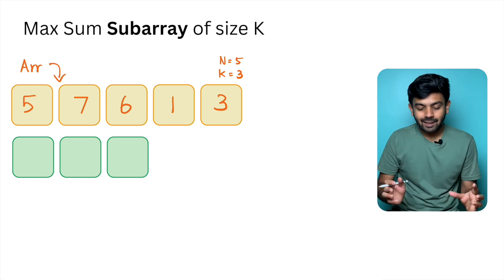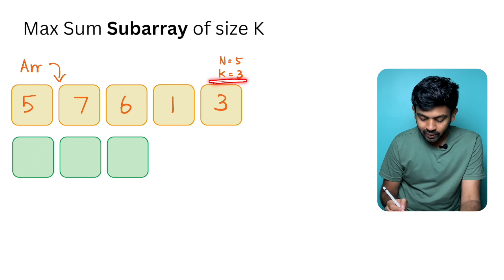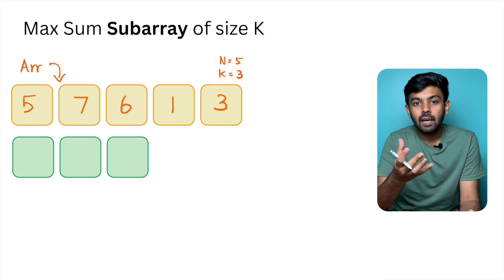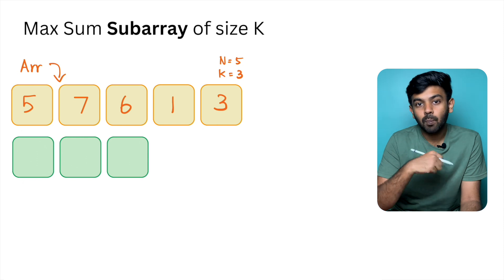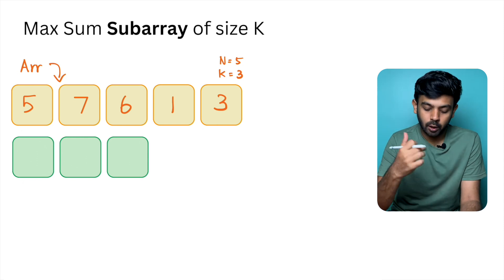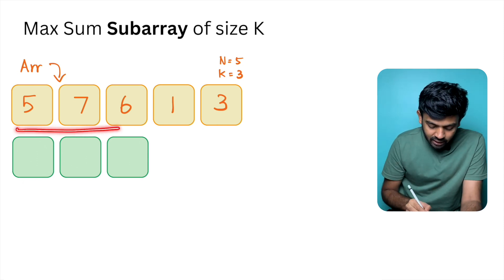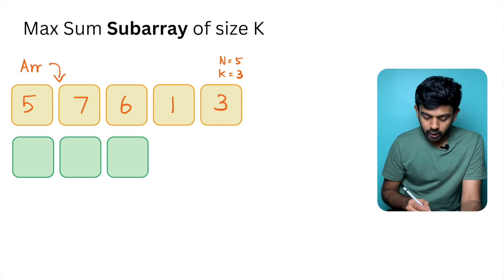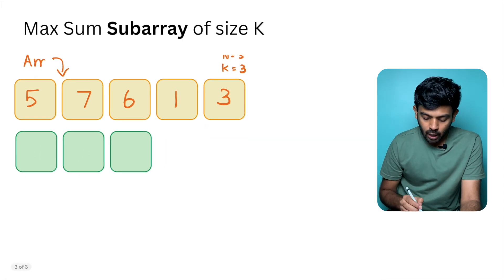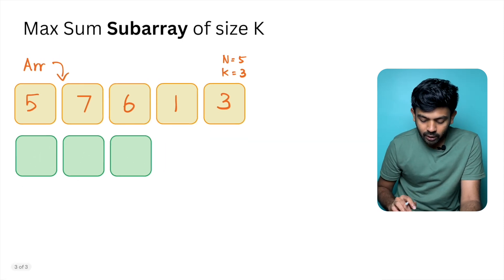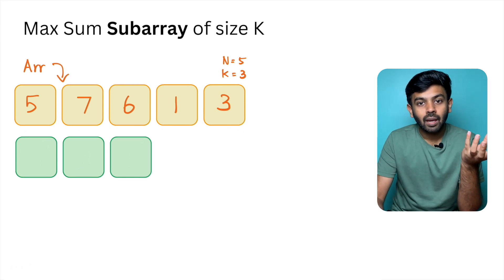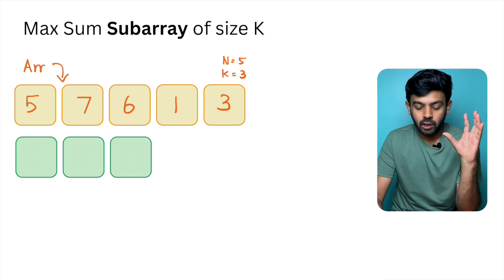A subarray of size 3 has a maximum sum. If you look at 5, 7, 6, you can add 5 plus 7 plus 6. Then 7, 6, 1: add 7 plus 6 plus 1. Then 6, 1, 3. We find the maximum of these sums and return it. This is the question.